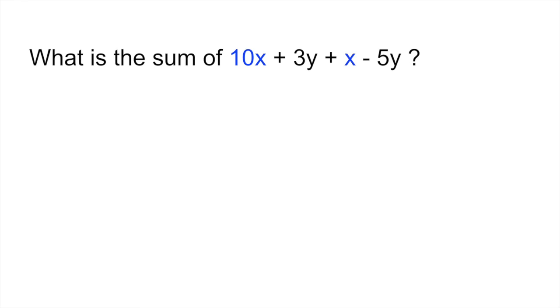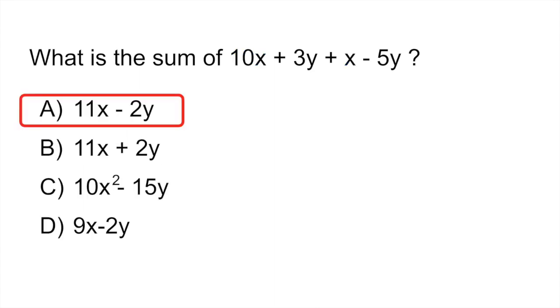So first of all, add all your X's. So 10X plus X would give you 11X. And then add all your Y's. 3Y minus 5Y gives you negative 2Y. So your correct answer would be 11X minus 2Y, which is answer A.